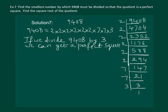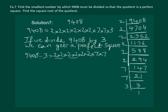So let us do so. We get 9408 divided by 3, which gives us 2 × 2 × 2 × 2 × 2 × 2 × 7 × 7. Now let us pair them — we can get a pair of each of the numbers.